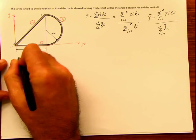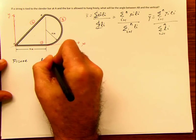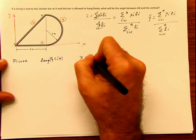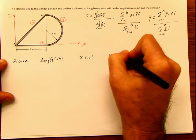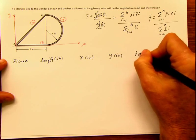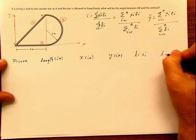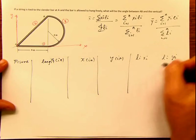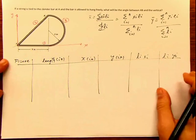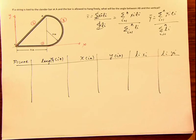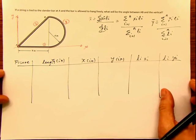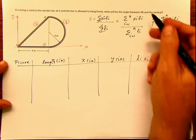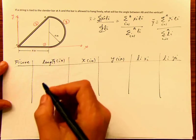So we build our table with figure, length (units are inches), x in inches, y in inches, then l_i * x_i and l_i * y_i, which correspond to the summation terms. At the end, we add them up and divide by the total length — that gives us the location of the centroid, which is not what the problem is directly asking, but it's an intermediate step we have to solve in order to answer the question the problem is asking.